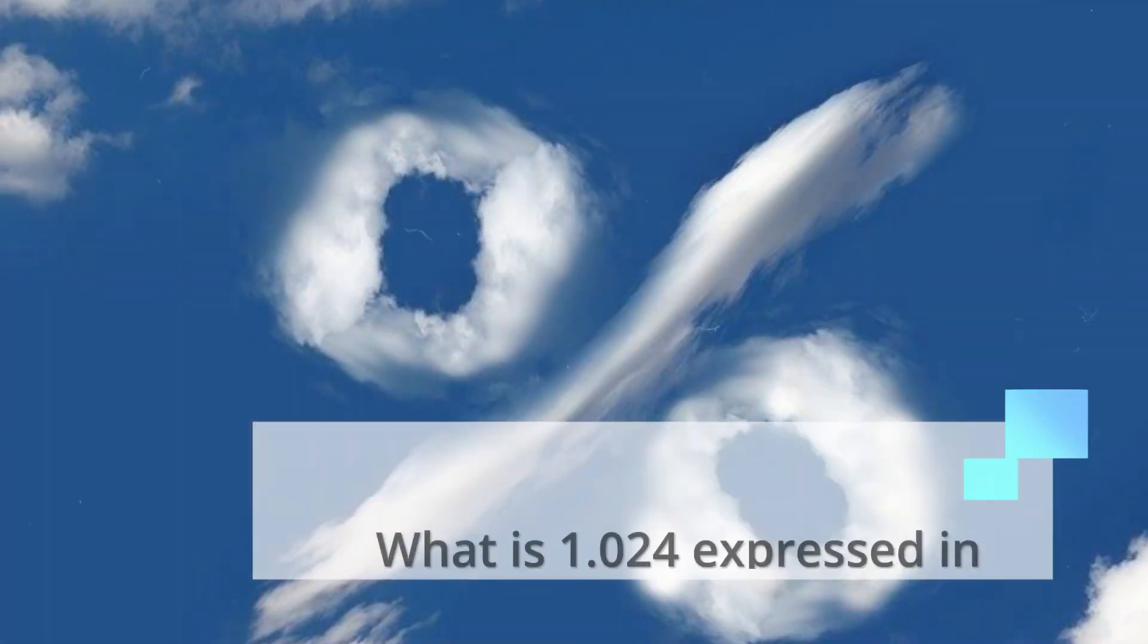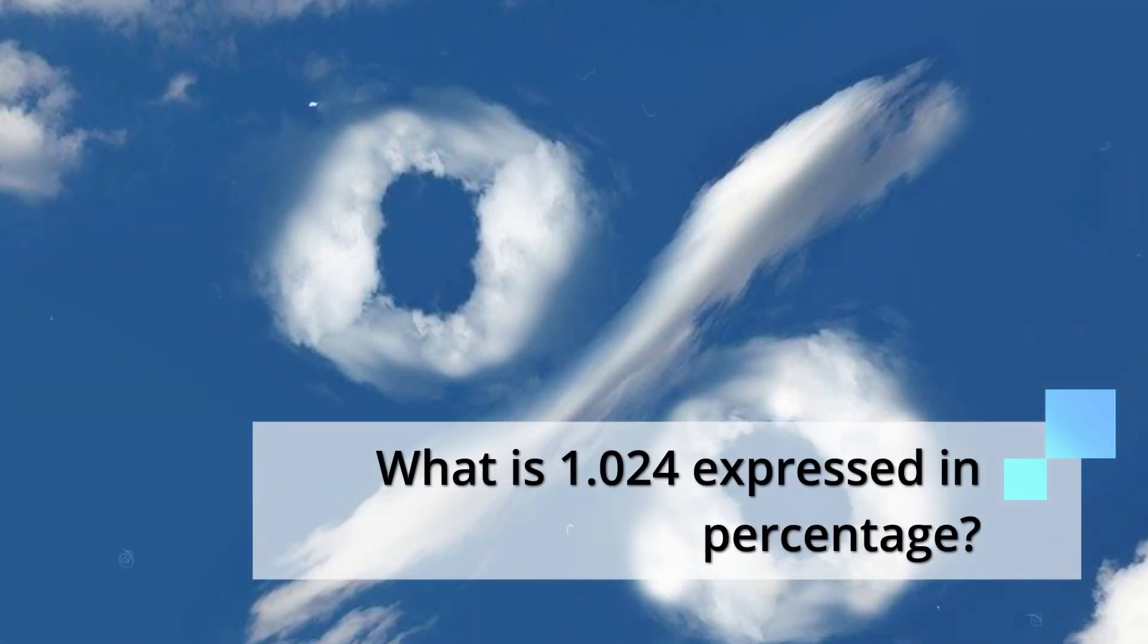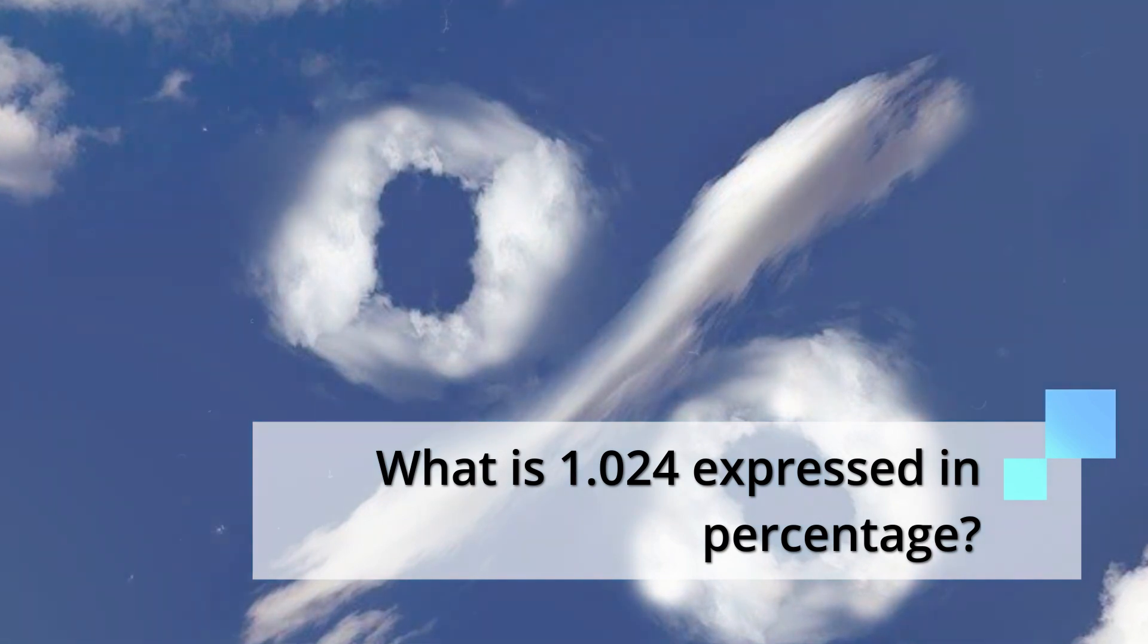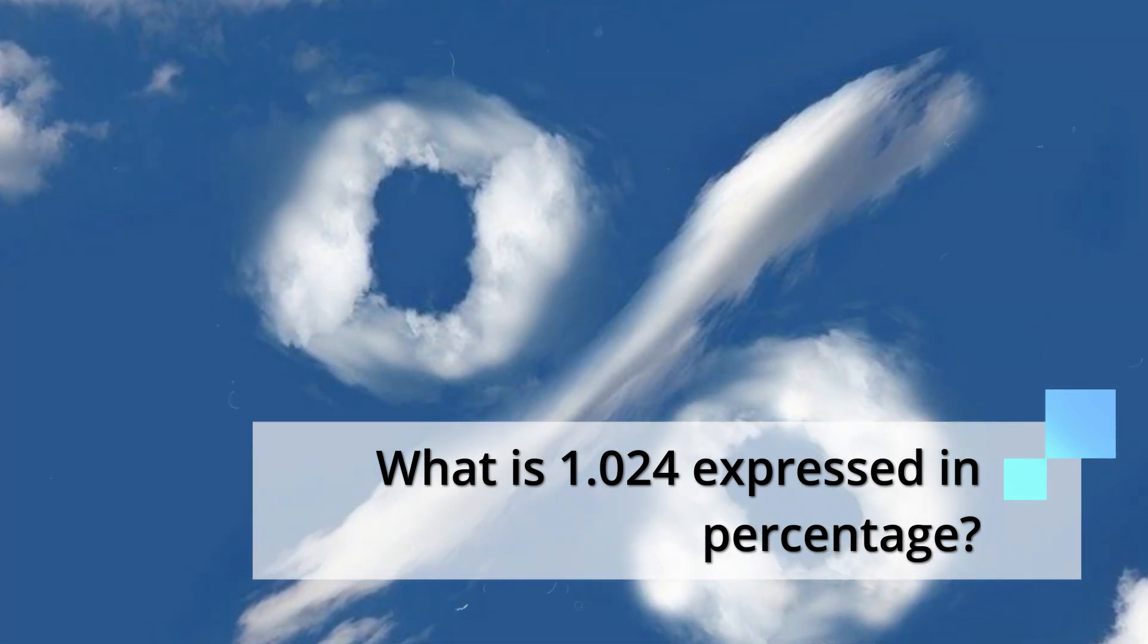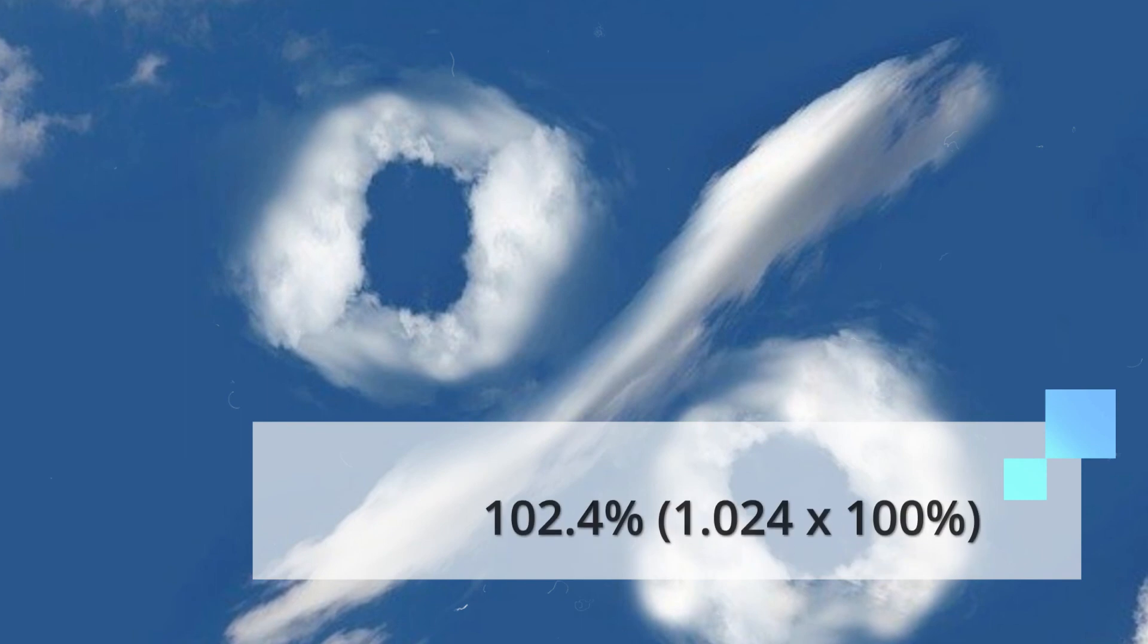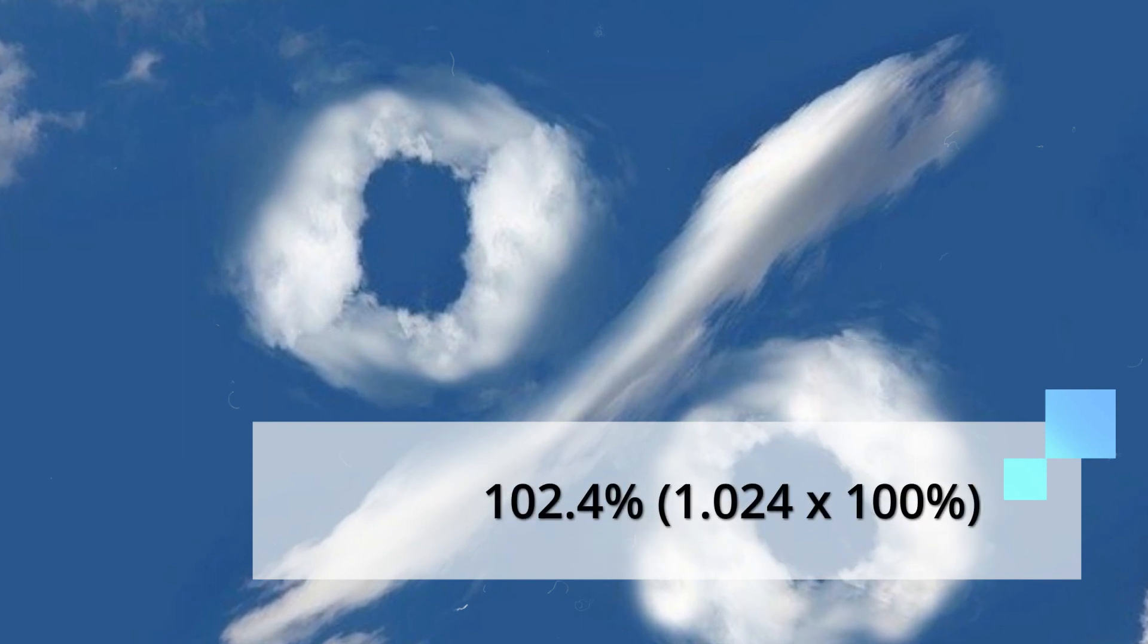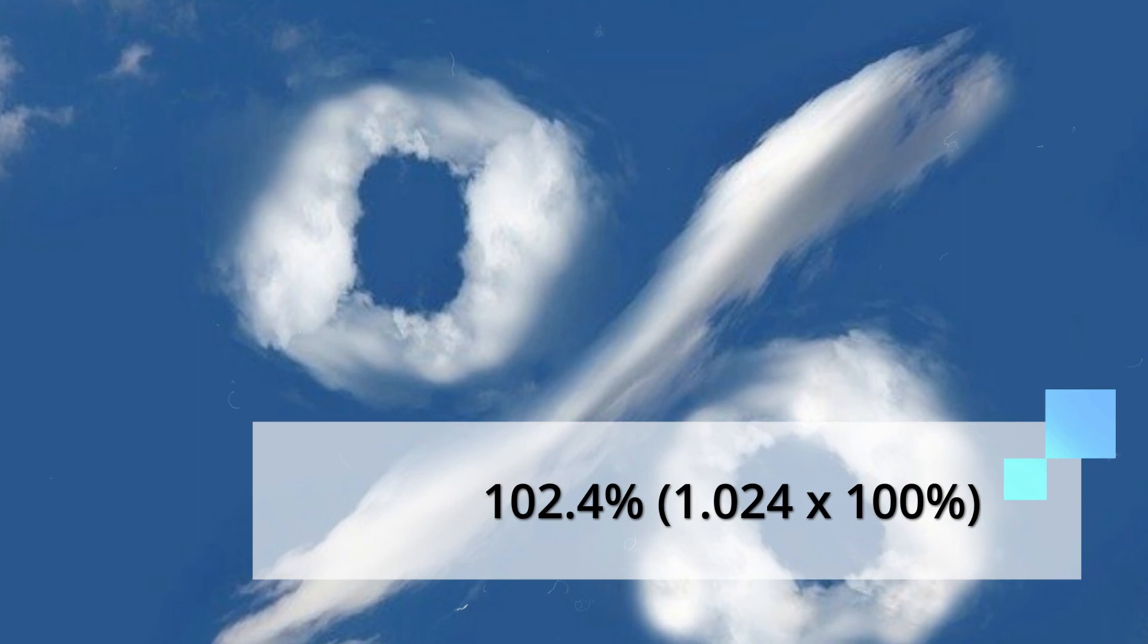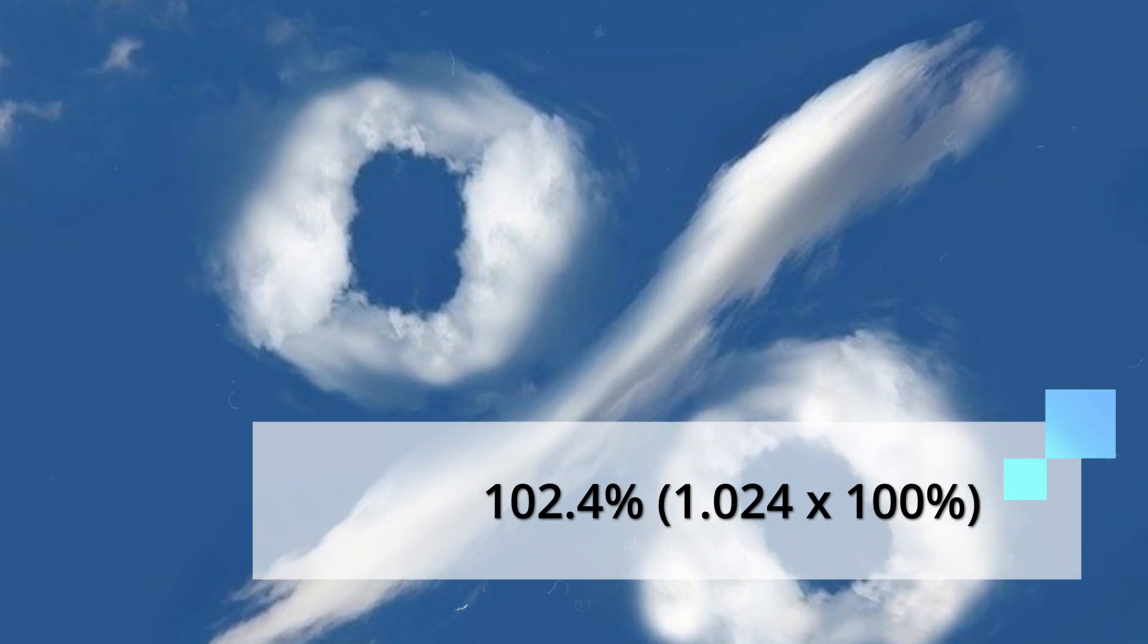And the last example. What is 1.024 expressed in percentage? Did you get it? It's 102.4%. Because it's 1.024 times 100%, then you get 102.4%.